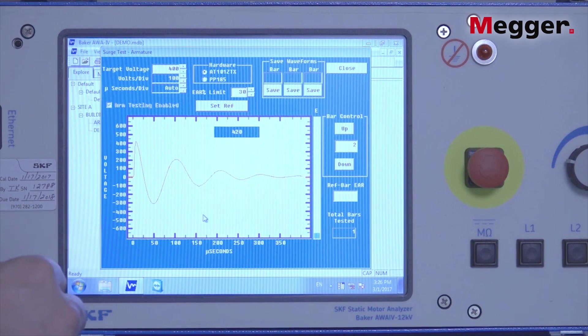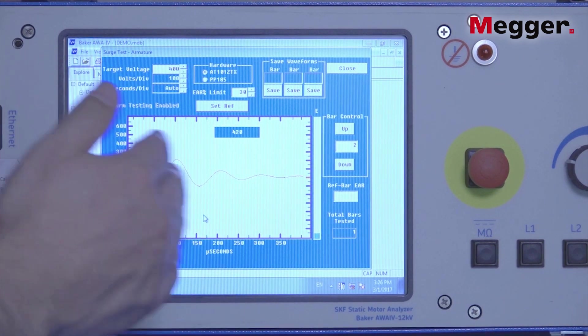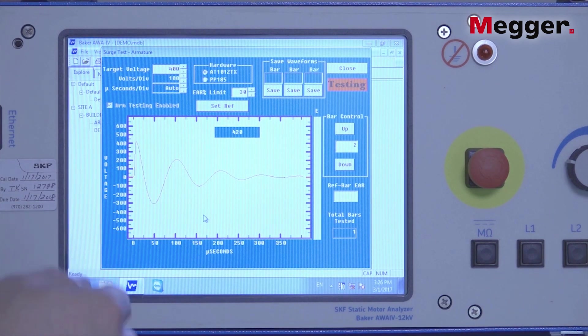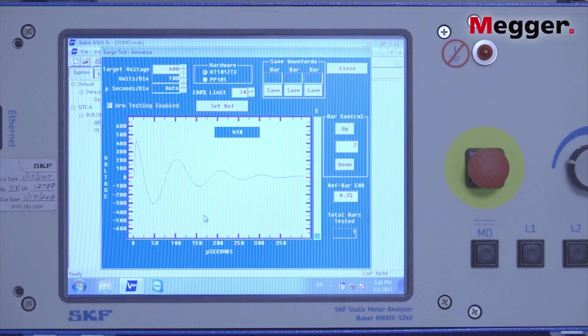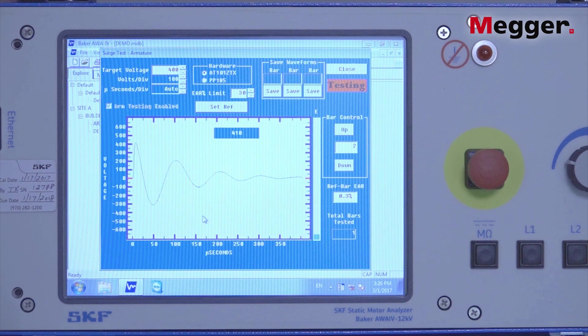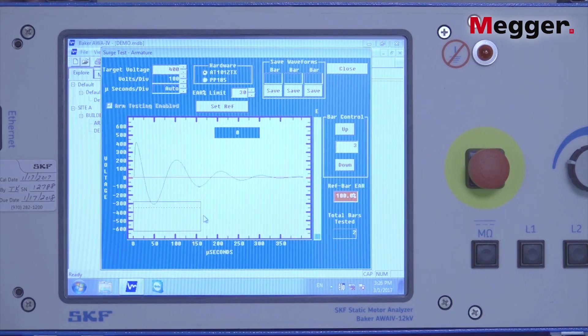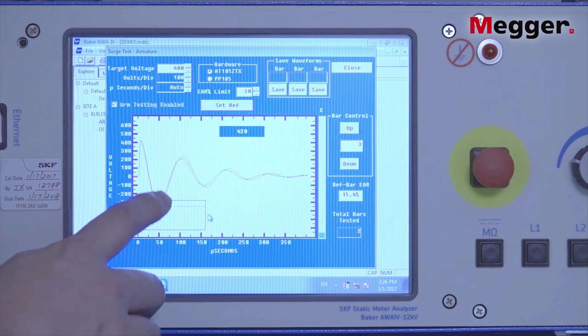Click yes to accept that. Now I'm ready to move on to the adjacent bar. Hit the test button again, and now the voltage is automatically going to come right back up to 400 volts. Just continue to move around the armature from bar to bar and make waveform comparisons.